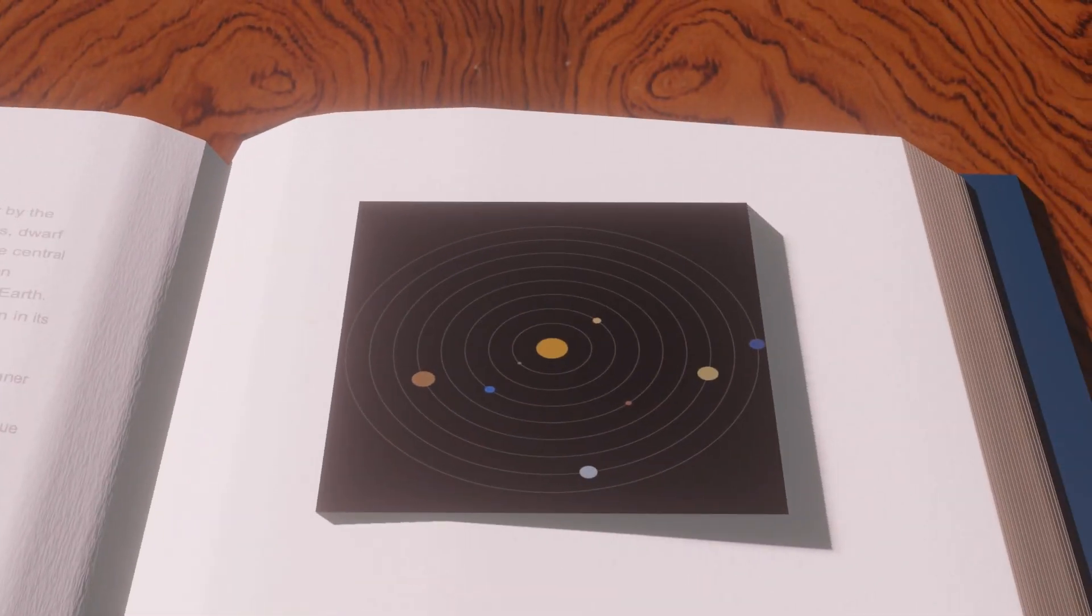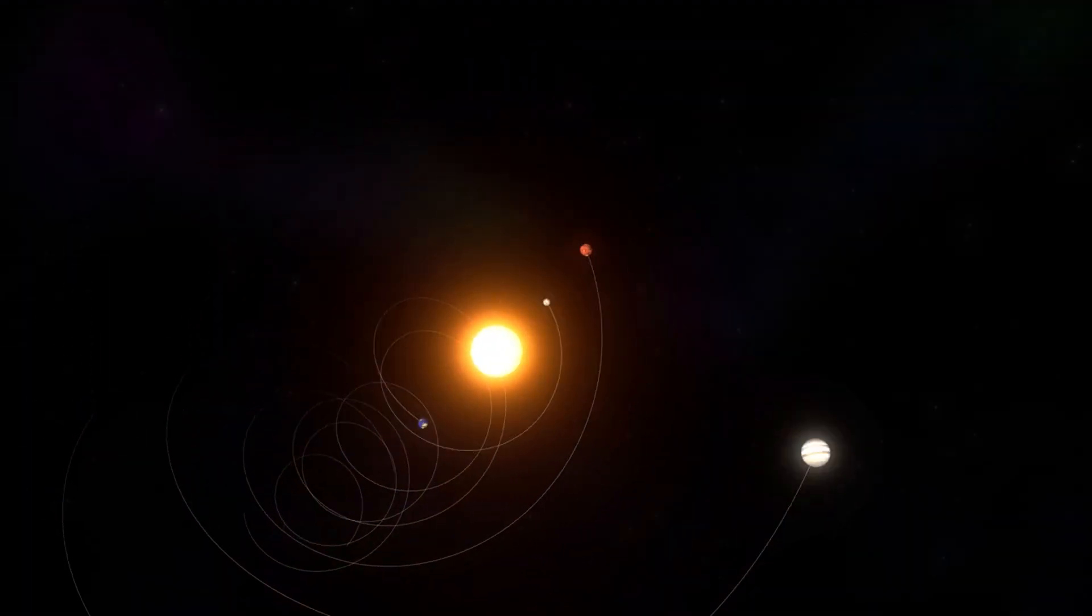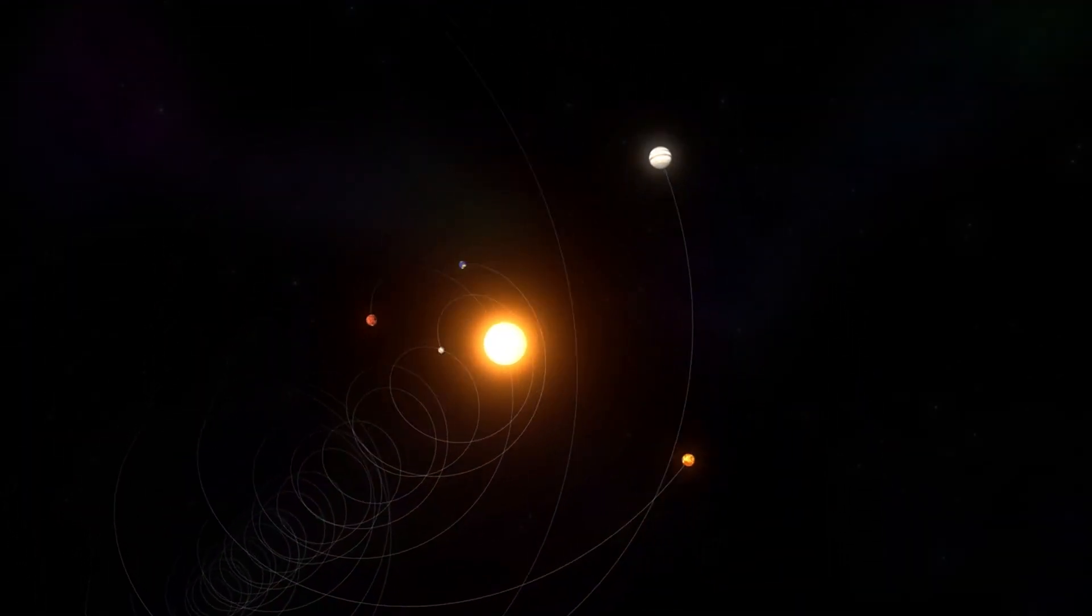We've seen this model of the solar system all throughout our lives. Maybe you've seen this vortex-like motion of the solar system, but really it is way more complicated.